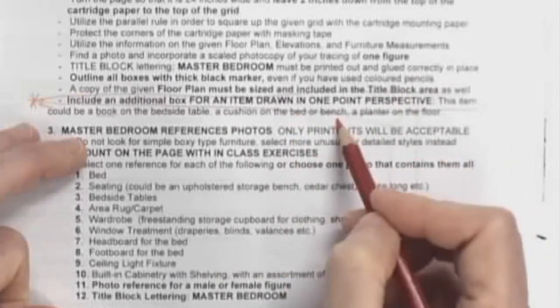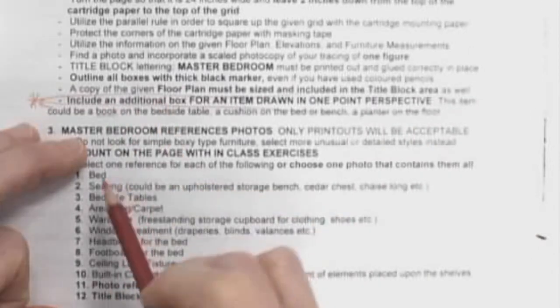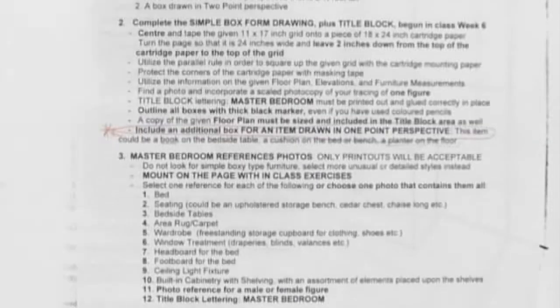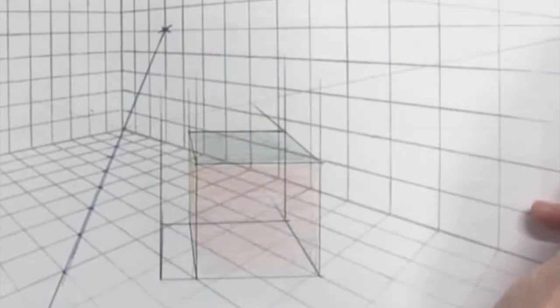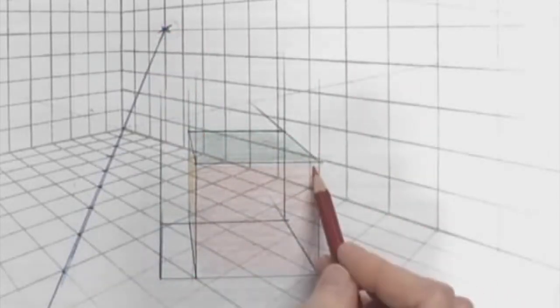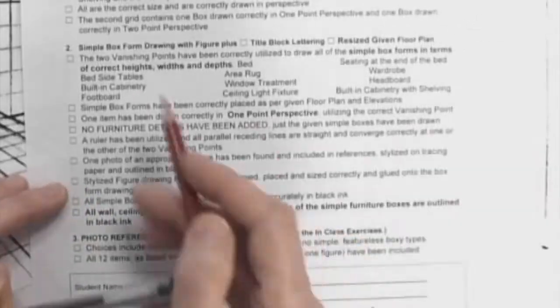It can be a book on the bedside table, a cushion on the bed or the bench, or a planter on the floor. But somehow you have to work in something drawn in one-point perspective. You'll see on our in-class sketches today, it's going to instruct you on how to find that vanishing point. Because you can't use your two vanishing points, you've got to use a single vanishing point. It's going to show you how to find the vanishing point and how to draw something in one-point perspective.